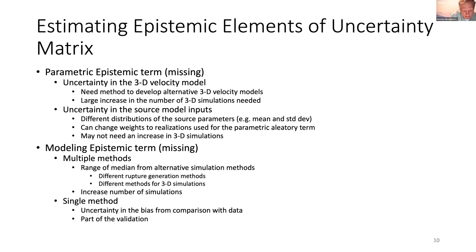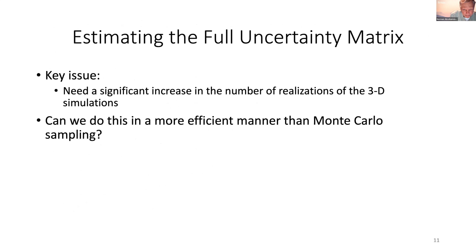For epistemic uncertainty in source model input distributions, we can probably address this by changing weights on the realizations being used without requiring additional simulations. On multiple methods, each group is generally running just one method, so we don't have the range across methods. For a single method, we can look at bias through validation, but that faces the same issues of potentially inadequate input data.